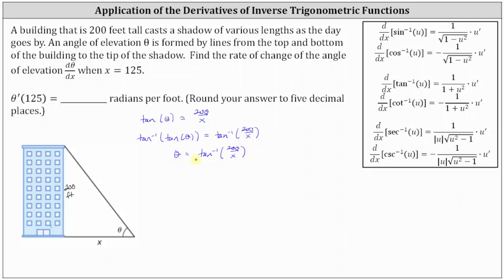Now that we have theta in terms of x, we can find d theta dx, or theta prime, by differentiating both sides of the equation with respect to x. Notice that to differentiate inverse tangent of 200 divided by x, we will have to apply the chain rule where the inner function u is equal to 200 divided by x.